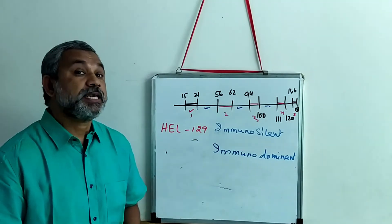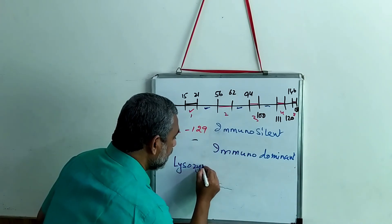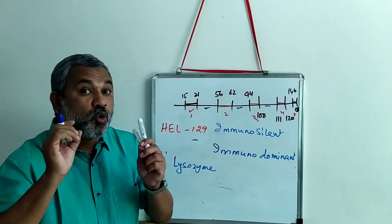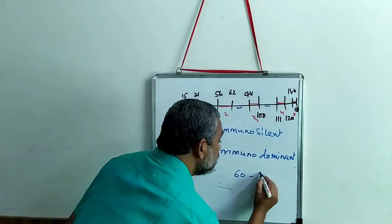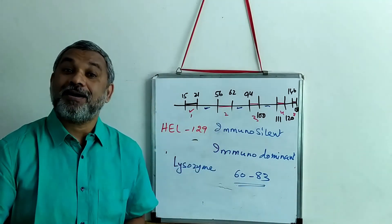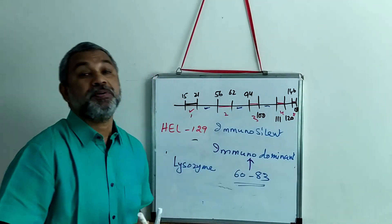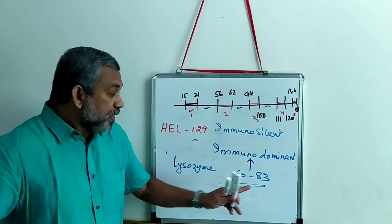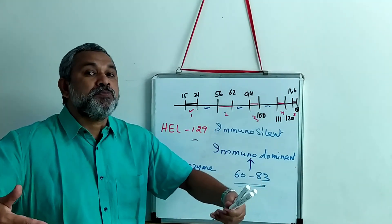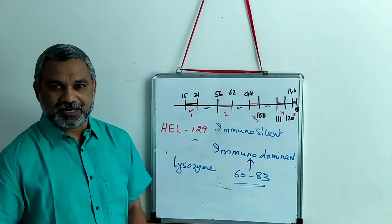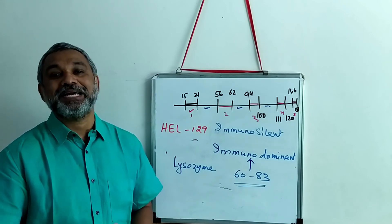For example, in the case of lysozyme, the sequence from amino acid 60 to 83 forms a very immunodominant antigenic determinant. This means this antigenic determinant is more powerful and more capable of inducing an immune response than other antigenic determinants. These are some of the characteristics of antigenic determinants.